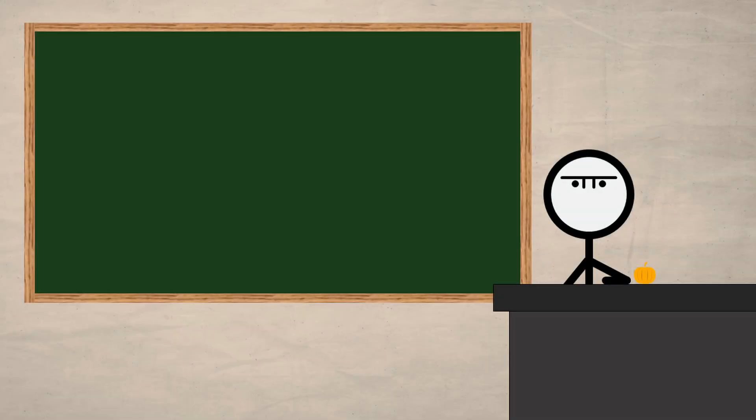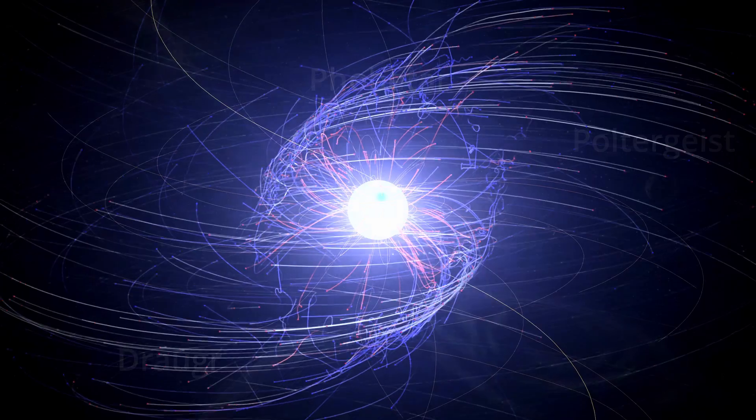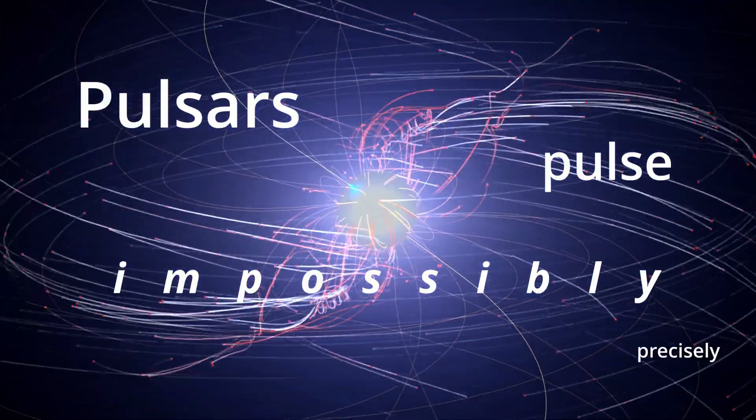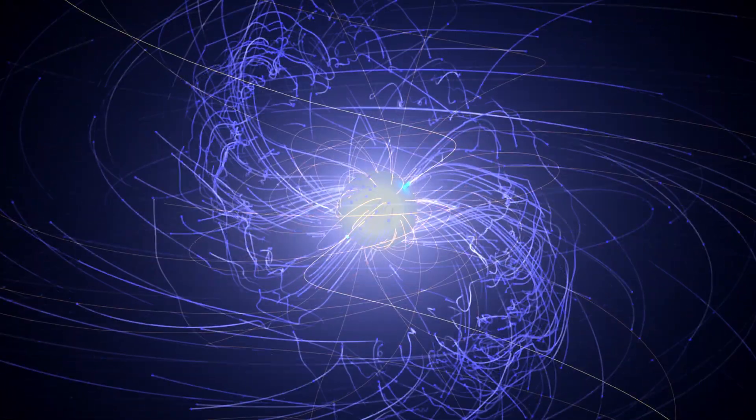The earliest exoplanets, called Poltergeist, Phobitar, and Draugr, were discovered by timing how often LICH shines its light on us. You see, pulsars pulse impossibly precisely, so even extra small undead themed rocks can cause detectable deviations, lagging our LICH light.